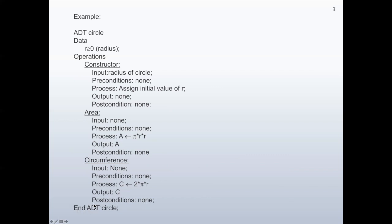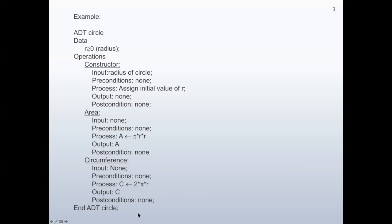This is the end of the abstract data type Circle. For the representation of abstract data types in C++, we have objects. For an object, we have a public part — which contains the constructor and other operations — and also a private part, which contains data member values and internal operations.